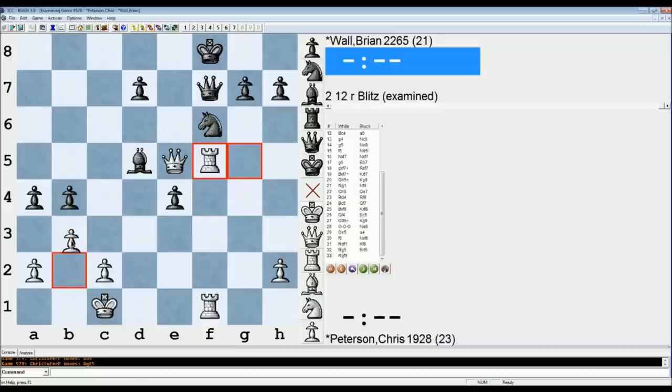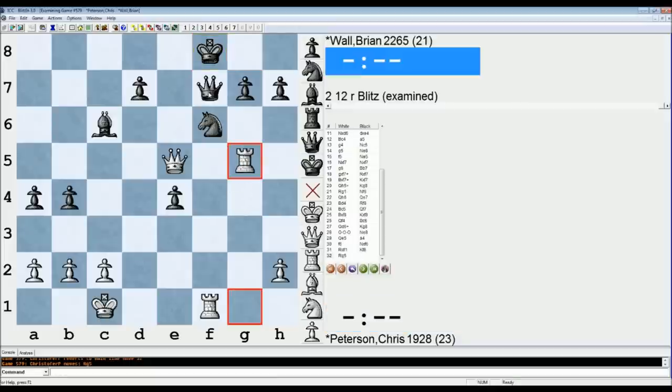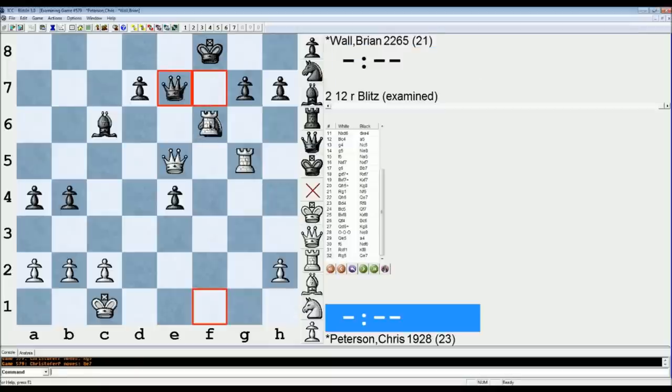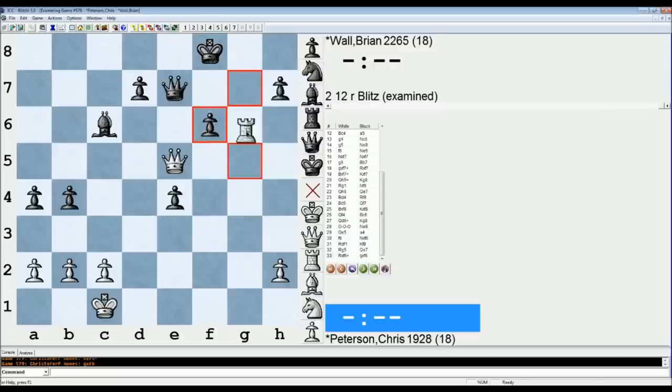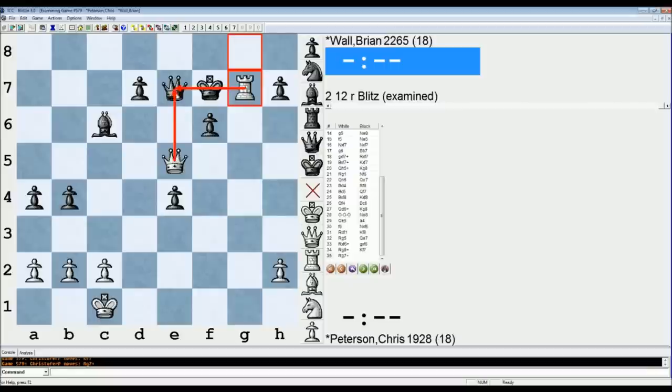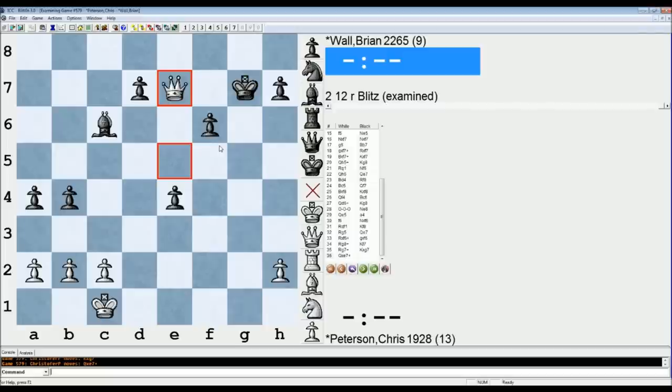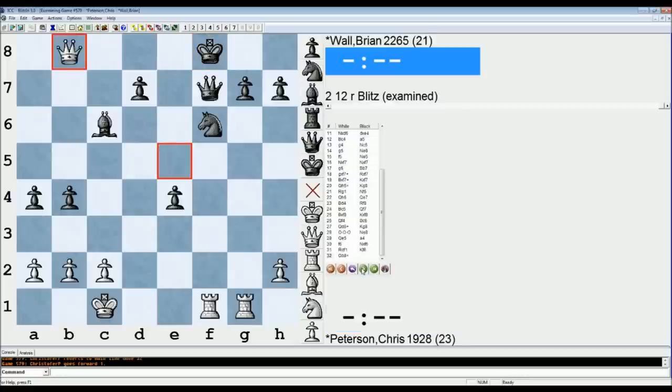And then if instead of queen takes f6, he tries 33 g takes f6, then rook g8 check, king f7, rook g7 check, king takes g7, and then queen takes e7 check wins his queen again. I was trying to trick him into falling for something similar to those sequence of moves with my check. But the rook g5 move is just so much more forcing, and it's just really convincing right away.